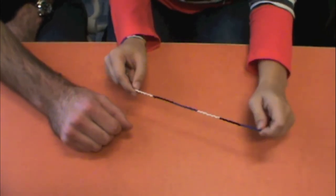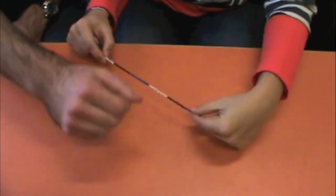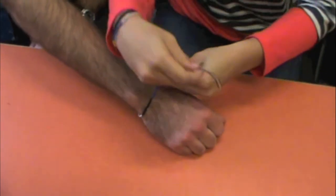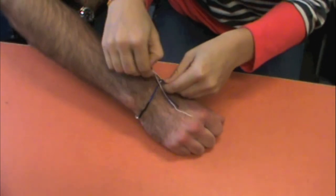Now that your bracelet is complete, you can tie it on your friend's wrist. Take it, wrap it around, and tie it in a knot.